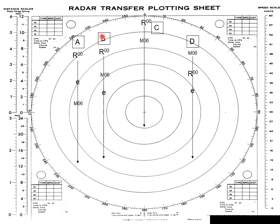In Contact B, we have our E to R — our true course and true speed. We still have relative motion, and we have the contact's true course and speed. We and the contact are both going in the same direction, but since we are going faster than them, we will be overtaking them.